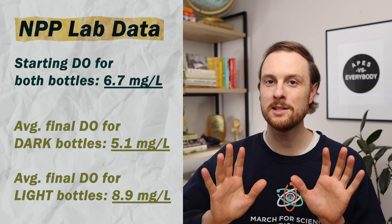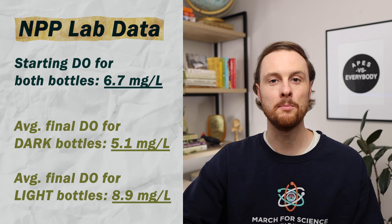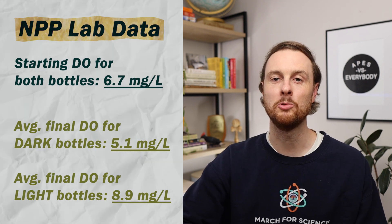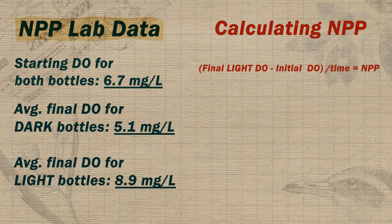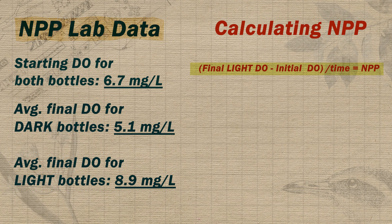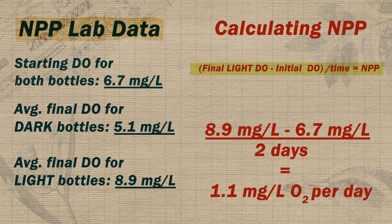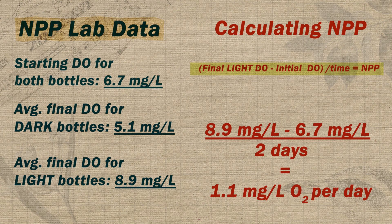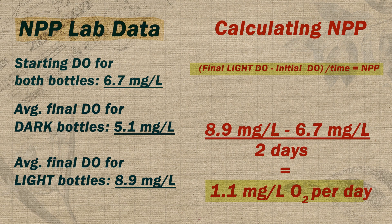If you're feeling like you've got the hang of this, pause the video and see if you can figure out which numbers to use to find the net primary productivity. To find NPP, we need the difference between the initial dissolved oxygen level and the final dissolved oxygen level for the light bottle. That's because this change in dissolved oxygen reflects all of the oxygen produced through photosynthesis minus what the plant used for respiration. Plugging in our initial and final DO levels for the light bottle and dividing by the two days we ran this experiment, the NPP of the guppy grass was 1.1 milligrams of oxygen per liter per day.